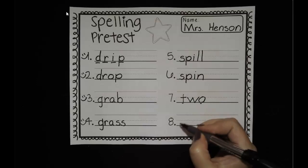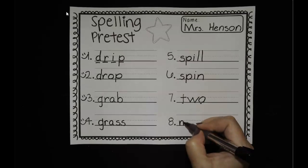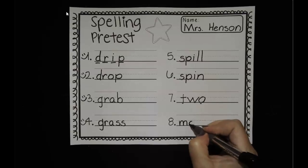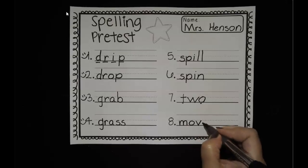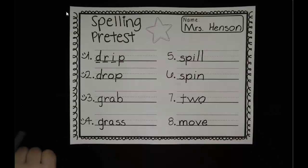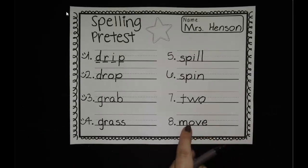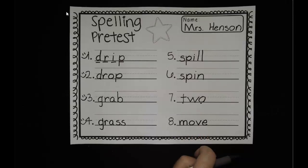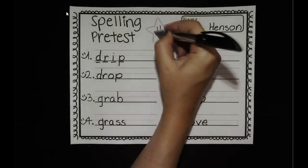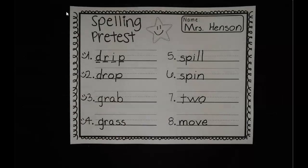And then our last one — move. This one's also a tricky one. Move. We have that M, then 'ooh' is an O. Move. And it also has a sneaky E. Usually sneaky E makes the vowel say its name, but here it doesn't say 'oh' — it says 'ooh,' because the word is move. We still have that sneaky E. Nice job, friends! Give yourself a smiley face on your paper. Great job practicing — we will keep practicing these words this week.